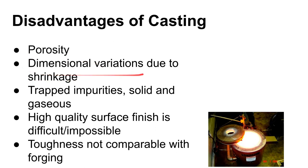You'll also get dimensional variations due to shrinkage, because as metals cool down they change in size — not only from the coefficient of thermal expansion but also because many metals go through phase transformations. And with most casting processes it's hard to get a really nice surface finish. Investment casting can get a pretty good surface finish, but it doesn't approach what you can get with machining and polishing, and lower-cost casting processes leave an even worse surface finish.